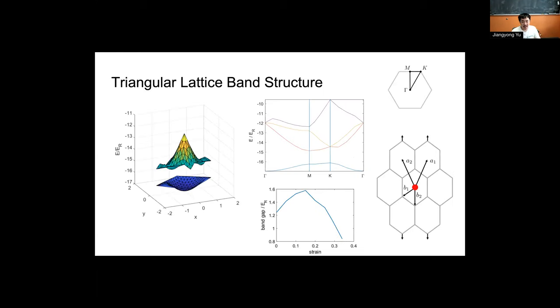When we first diagonalize this, we get the triangular lattice band structure. This band structure is pretty familiar to us, and we can confirm it with results done before.